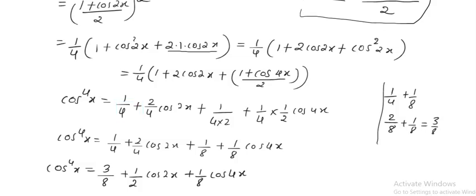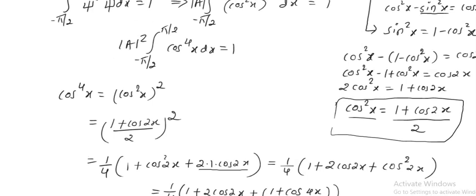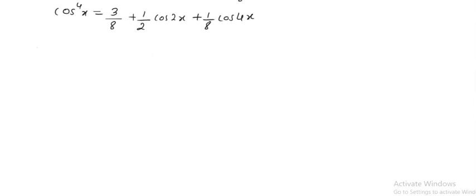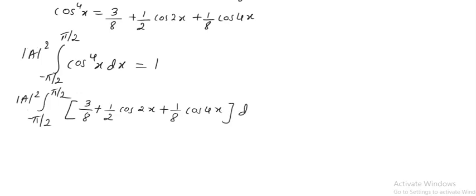Now we can replace cos to the power 4x in this equation. The integral from minus pi by 2 to plus pi by 2 of cos to the power 4x dx equals 1, which becomes the integral from minus pi by 2 to plus pi by 2 of [3 by 8 plus (1 by 2) cos 2x plus (1 by 8) cos 4x] dx equals 1.